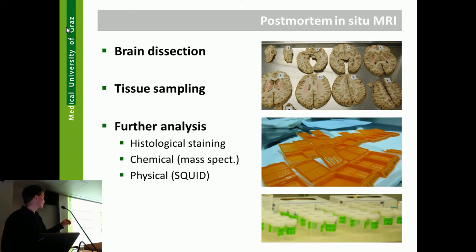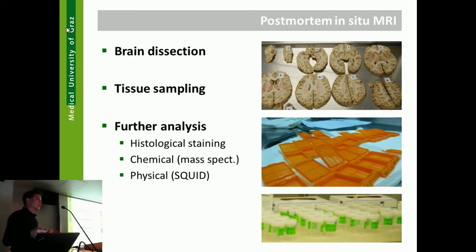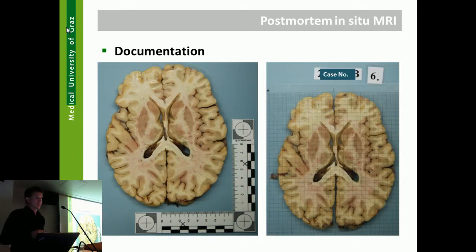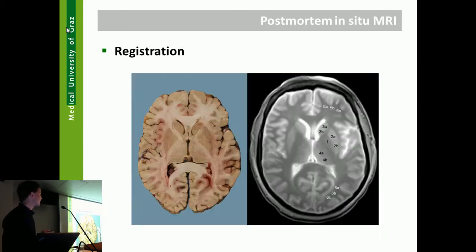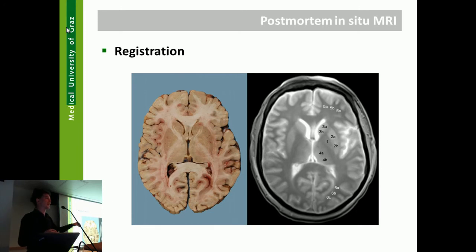These tissue samples are either used for histology or for mass spectrometry, which is useful for looking for metals — iron, manganese, and calcium. We also do SQUID susceptometry with the brain tissue. I want to stress again that documentation is one of the most important things when doing these correlation studies. Otherwise, it is really quite impossible to register brain tissue from the position of extraction to the MRI image.